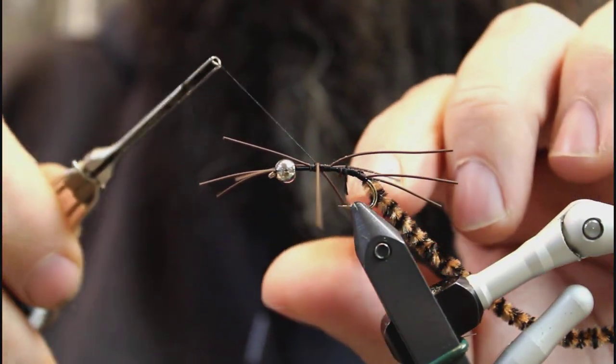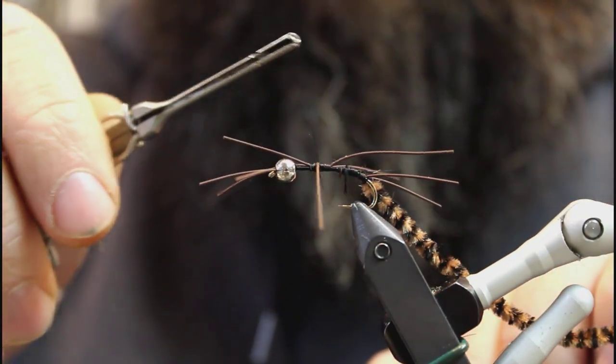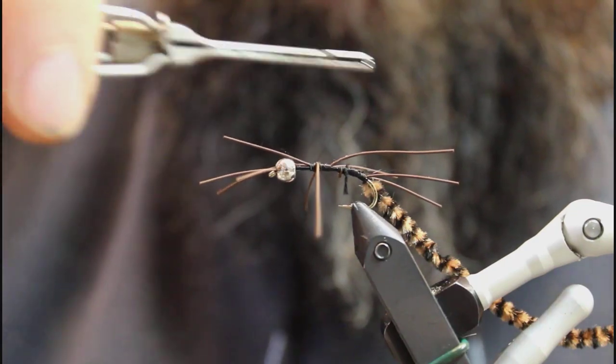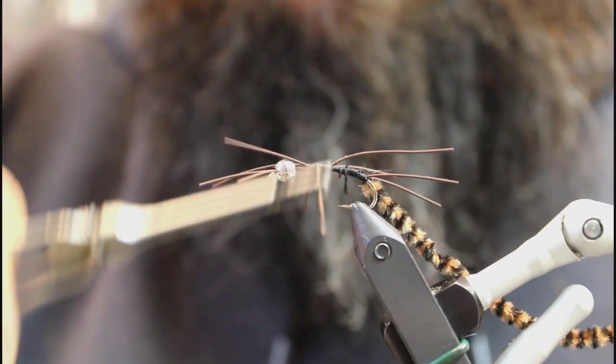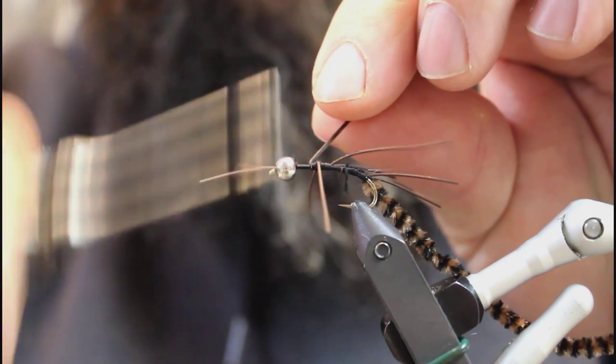What I'm doing here is I'm kind of using the thread to manipulate these legs, so they're pretty even on both sides here. And then you want to make sure that you get these tied in pretty firm. If not, what happens is you'll end up with body twists.